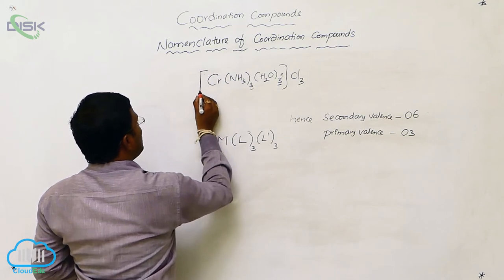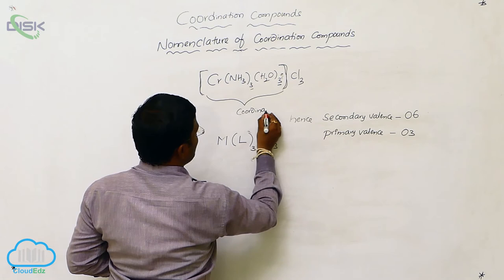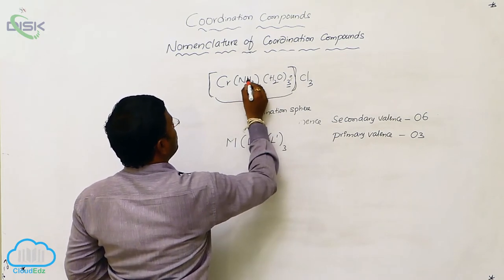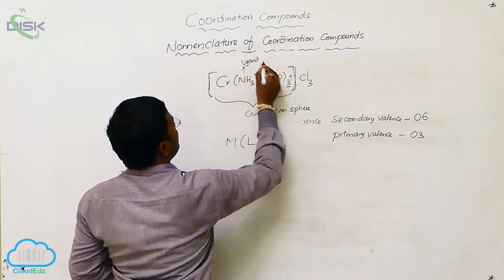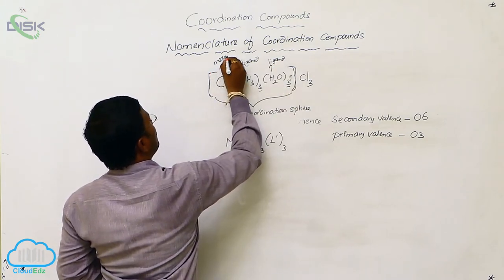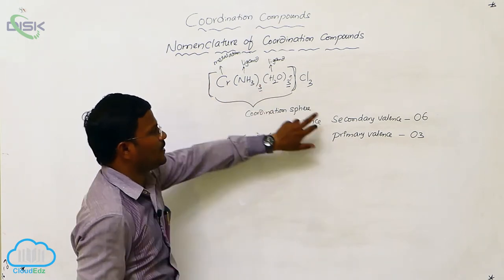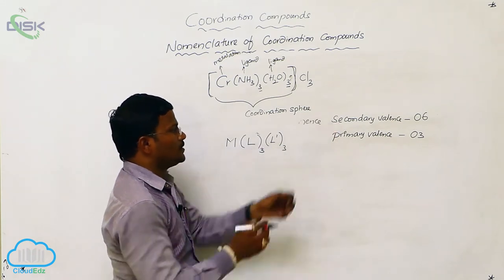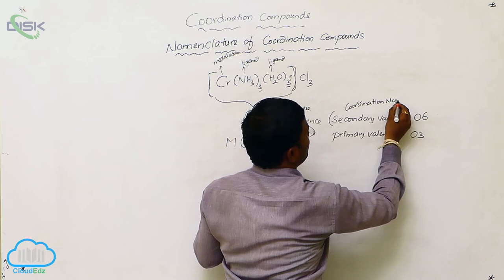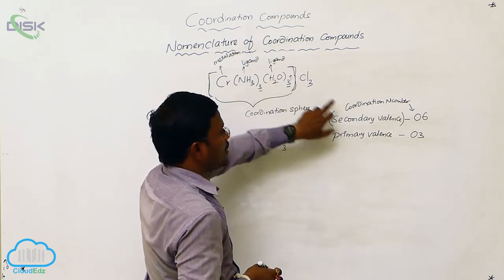The area present inside the square bracket is called the coordination sphere. Ammonia and water are called ligands — one type of ligand and another type of ligand — and chromium is called the central atom or metal atom. These two different types of ligands together provide the secondary valency, or coordination number, which is six. Outside the coordination sphere, the number of ions is the primary valency.